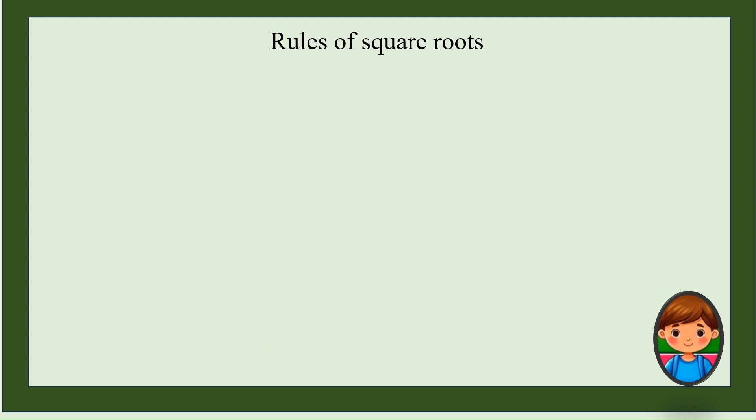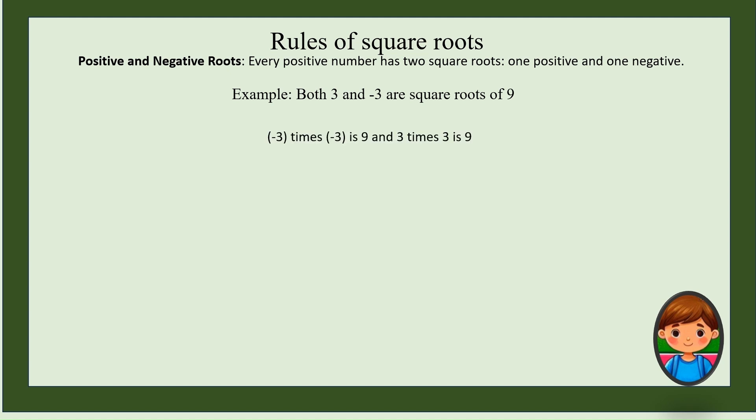Now here are the rules of square roots. Every positive number has two square roots, one positive and one negative. For example, both 3 and minus 3 are square roots of 9. Why? Because minus 3 times minus 3 is 9 and 3 times 3 is also 9. The second rule is square root of 0 is 0 because 0 times 0 is 0.